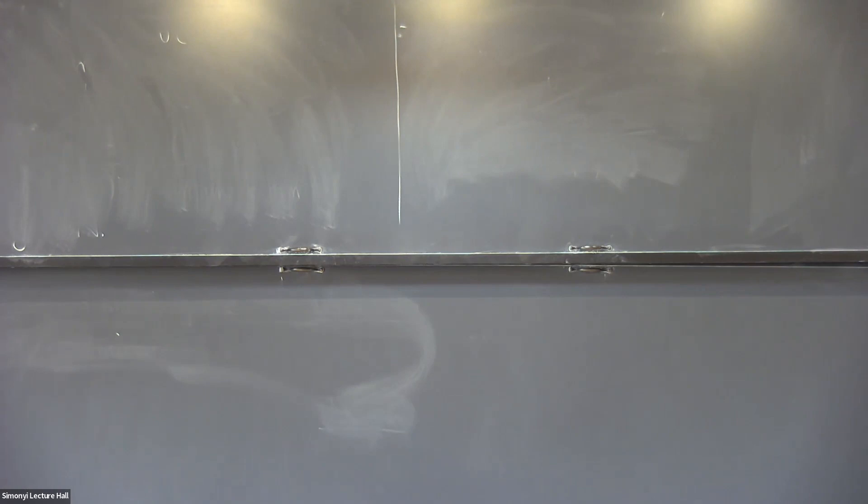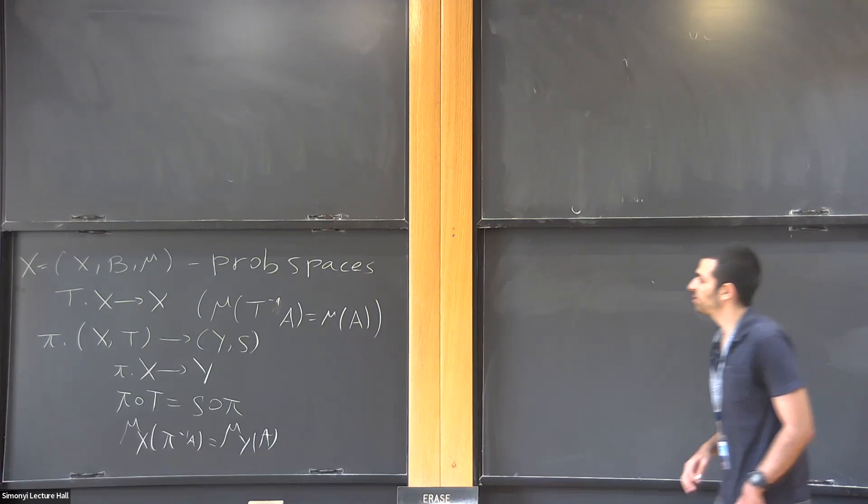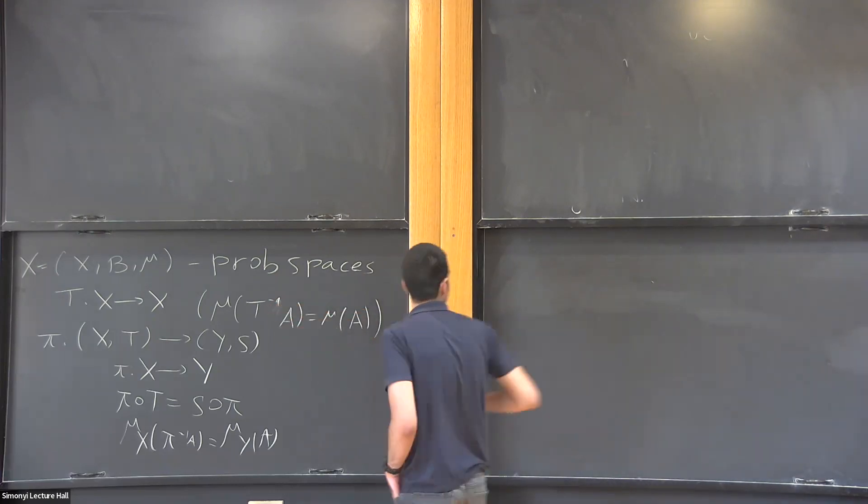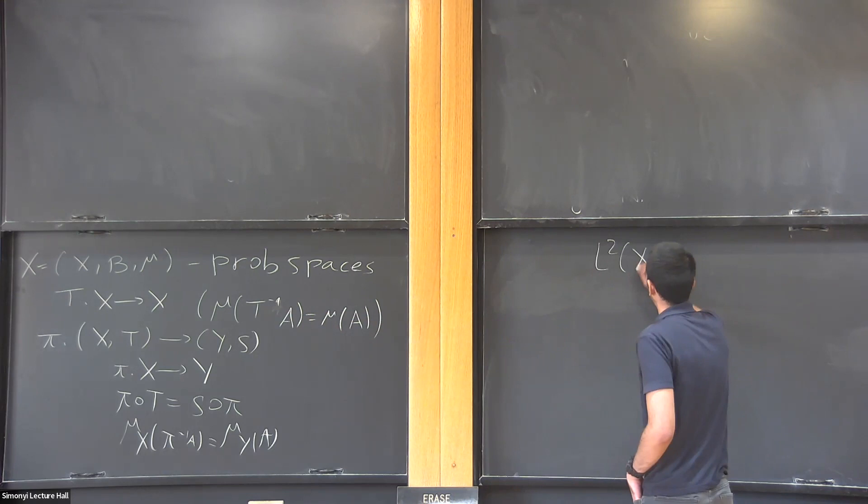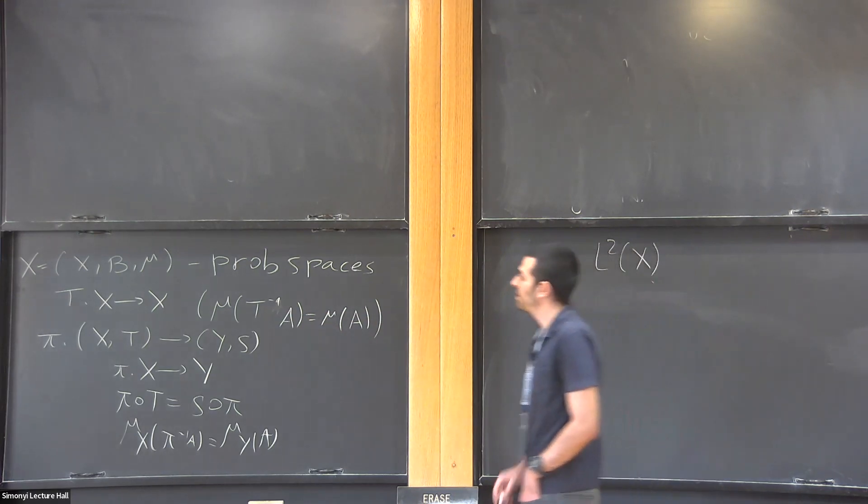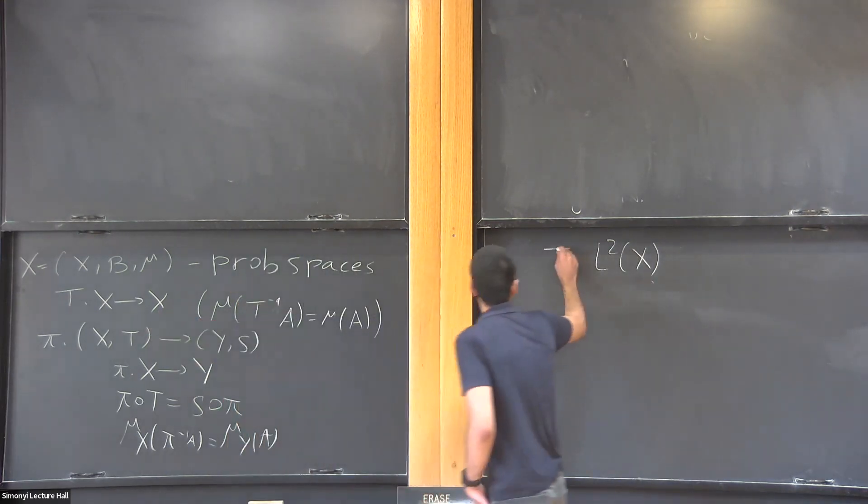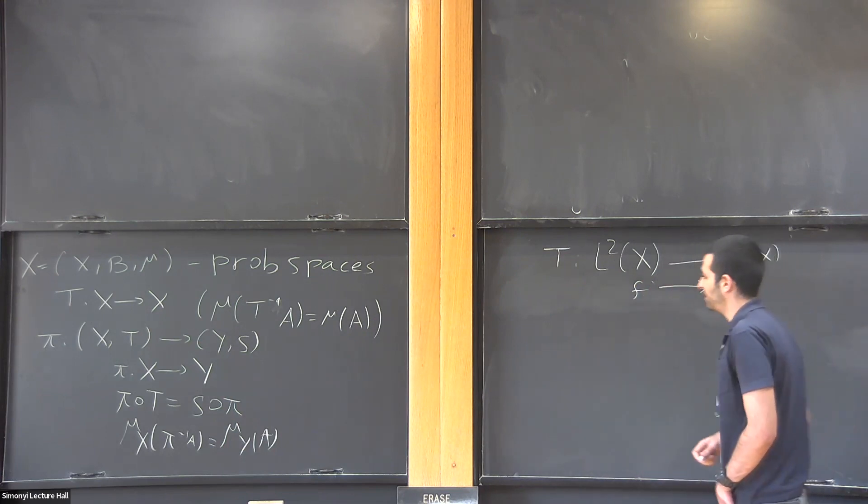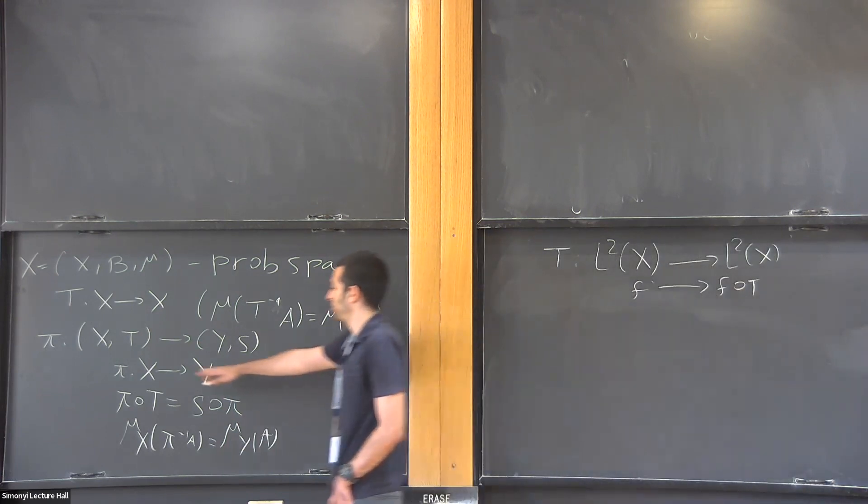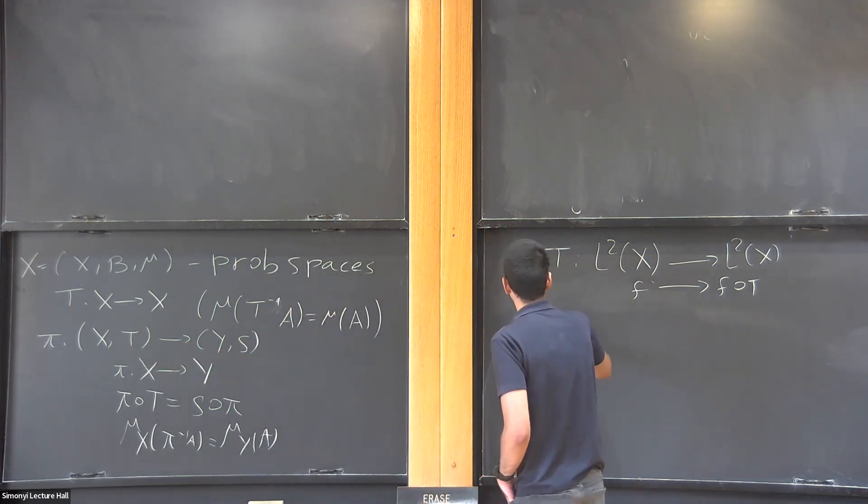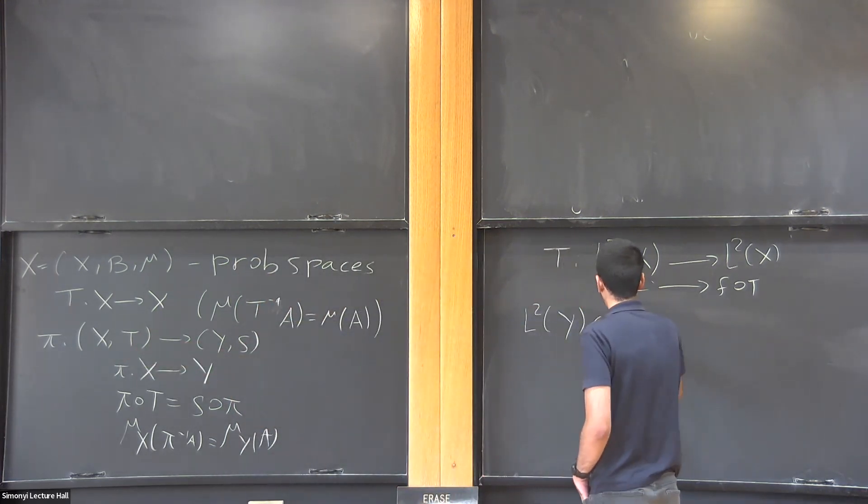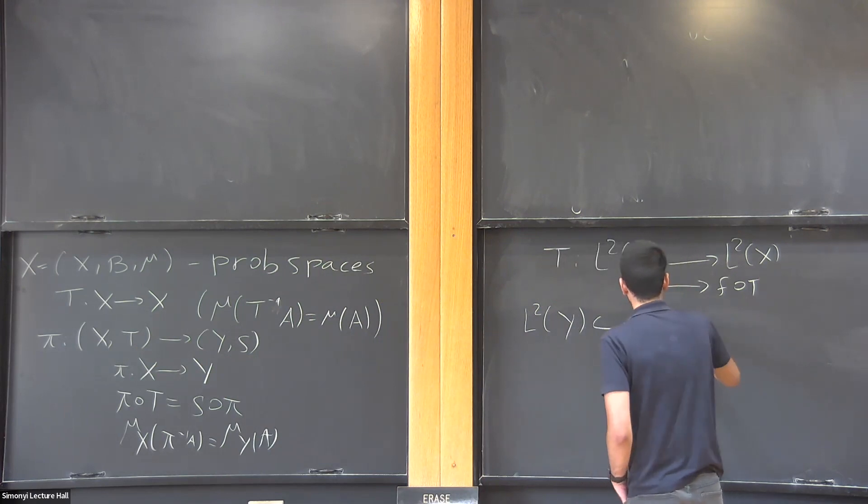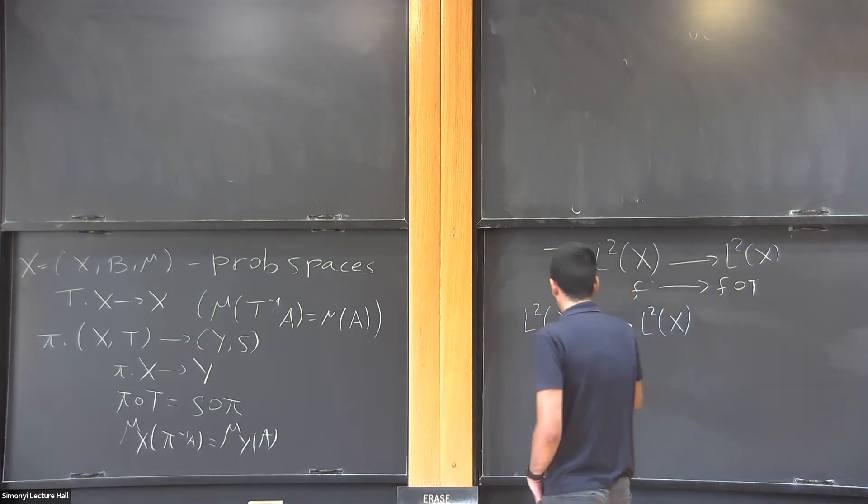Von Neumann observes that one can think about these settings from the point of view of functional analysis. Once you have a probability space, you can construct the L2 of the probability space that's a Hilbert space. Once you have this map T, you can define a very natural linear operator taking f to the translation by T, and also when you have a factor map, you can define an embedding of the Hilbert space related to Y to L2 of X simply by lifting.